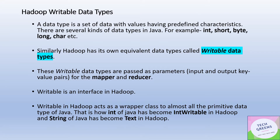Data types are used in almost all languages, be it Java, C, or others. A data type is a set of data with values having some predefined characteristics. There are several data types in Java like short, byte, long, char, etc. Similarly, Hadoop has its own equivalent data types called writable data types.